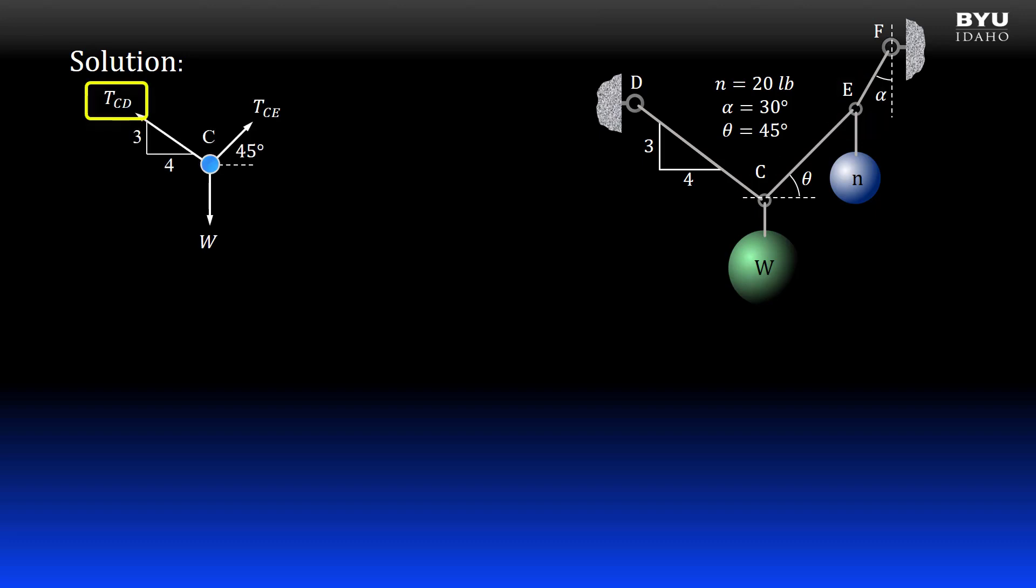If we look at point C, we see three forces: TCD, TCE, and W, all of which are unknown. So we will have three unknowns, but we only have two equations of equilibrium available: the sum of forces in the x direction and the sum of forces in the y direction.